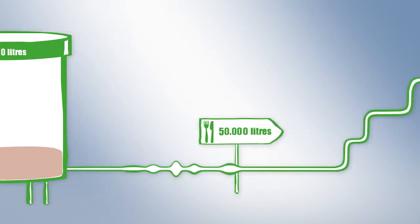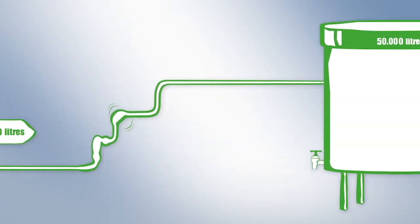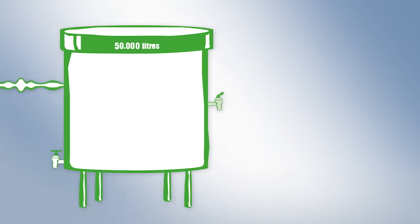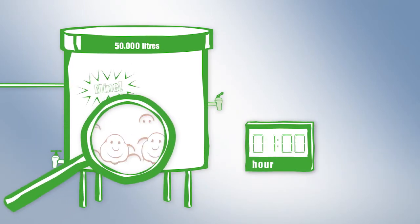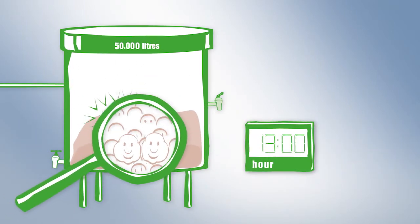It then continues to the third and final fermenter with a capacity of 50,000 liters which provides new nutrients for the organic yeast. After another 20 hours of fermentation, the result is organic yeast milk.